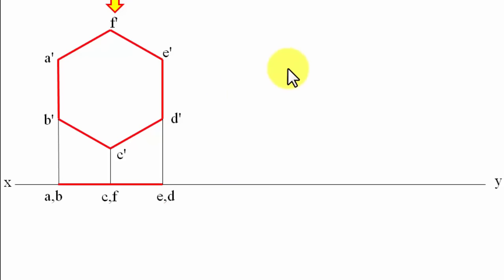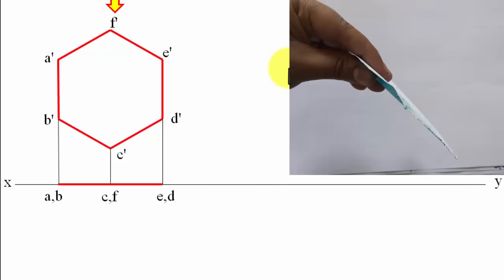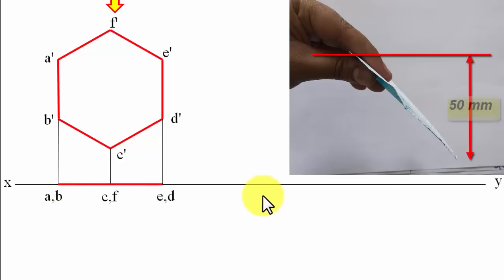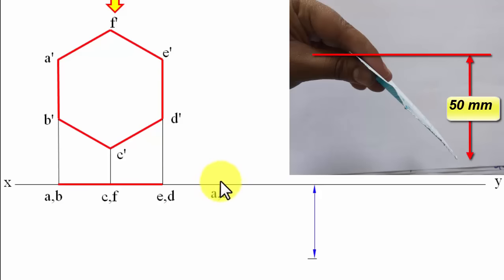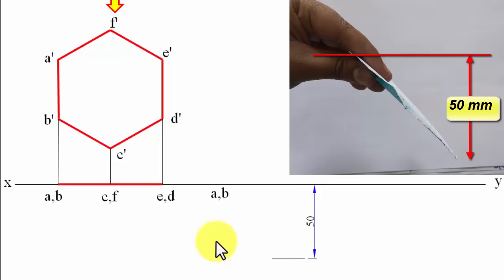In step two, no direct surface inclination is given, but it is given indirectly: edge ED, opposite to edge AB, is 50mm in front of the VP. So we place point AB on the XY line and draw a line 50mm in front of it for the opposite edge.